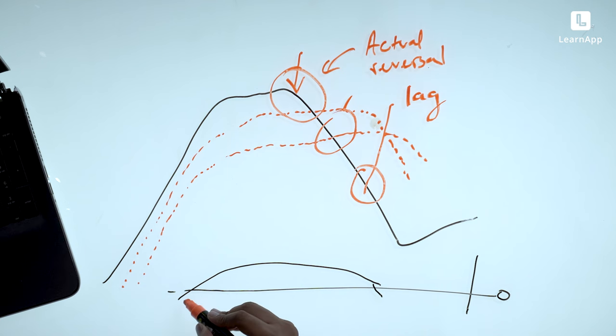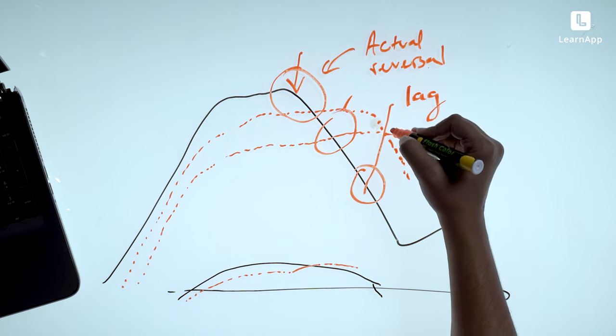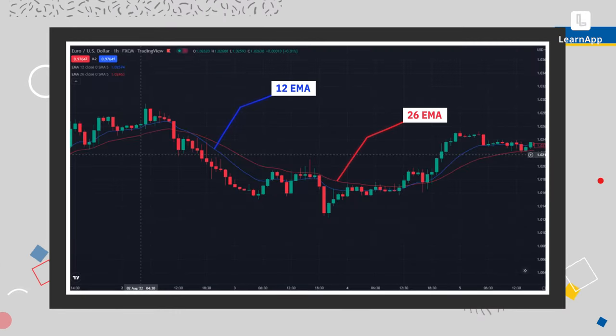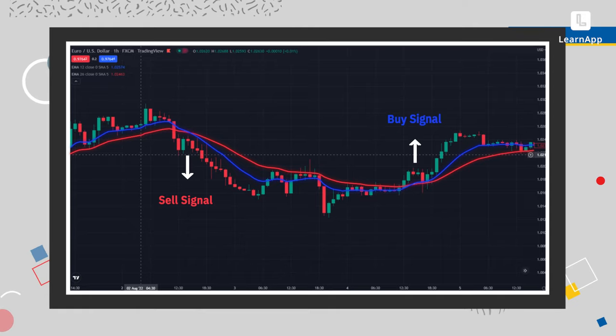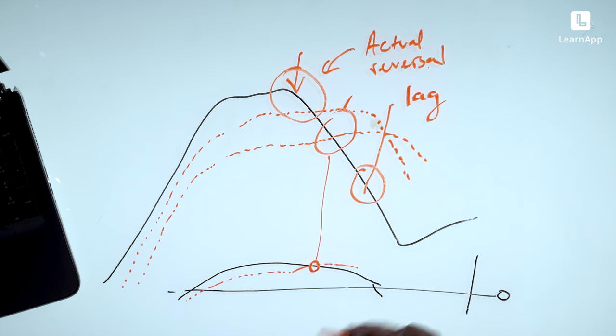The trick is very simple. Gerald Appel, who created the MACD, added one EMA to this particular line — and this EMA actually turns trend faster than our normal moving average. So here, a sell signal was generated much, much earlier. To summarize: we plot the 12 EMA and 26 EMA difference in the MACD. In any charting tool, you just add MACD as an indicator, and on top of that, you add a 9 EMA — the signal line. That gives you a signal that is faster or earlier than a normal EMA crossover.